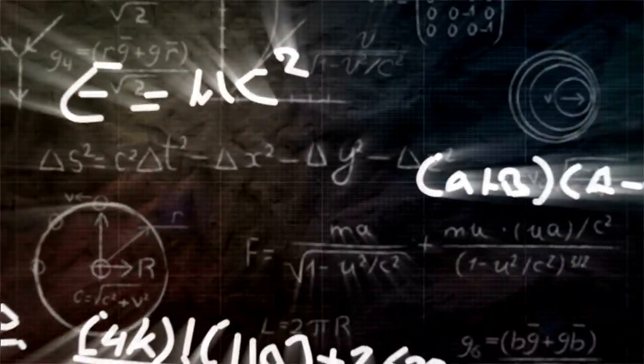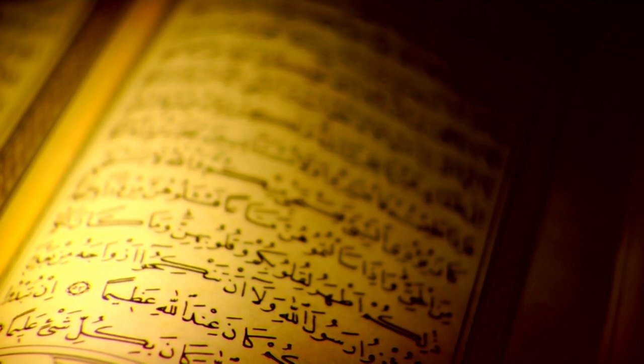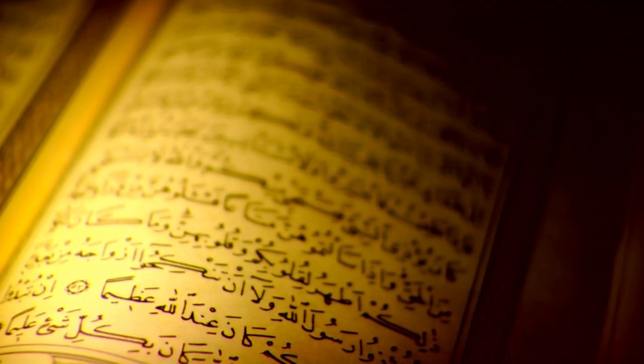The word month is used 12 times in this same text. The words man and woman are mentioned 24 times each, and sometimes in different contexts. The word dunya, the world we live in, is mentioned 115 times, and the word that references the hereafter is mentioned 115 times.